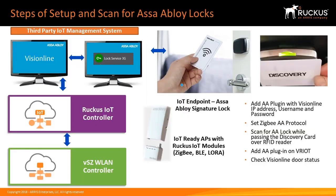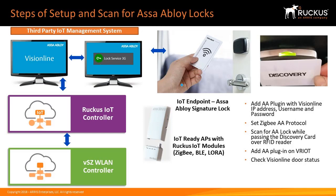The major steps of setup include configuring the VisionLine server, configuring Lock Service 3G, then going to the Ruckus IoT controller and doing the following: add the ASSA ABLOY plug-in with the VisionLine IP address, username, and password; go to the IoT AP and set the Zigbee ASSA ABLOY protocol; scan for the lock while passing the Discover card over the RFID reader; then check VisionLine for the door status.